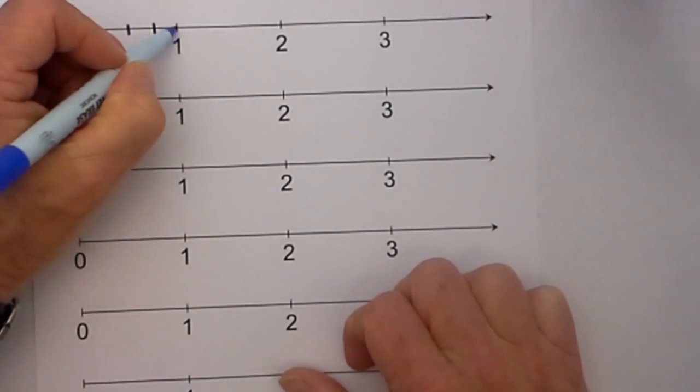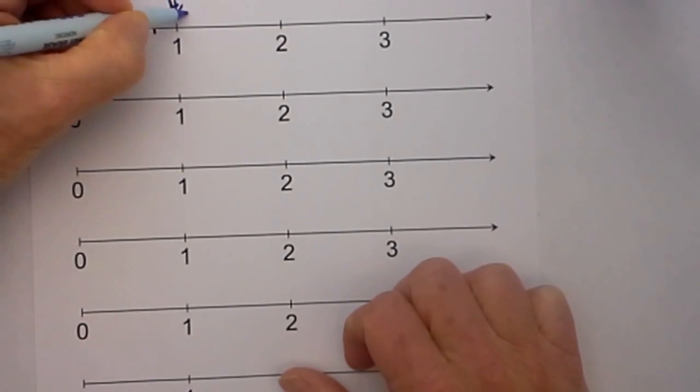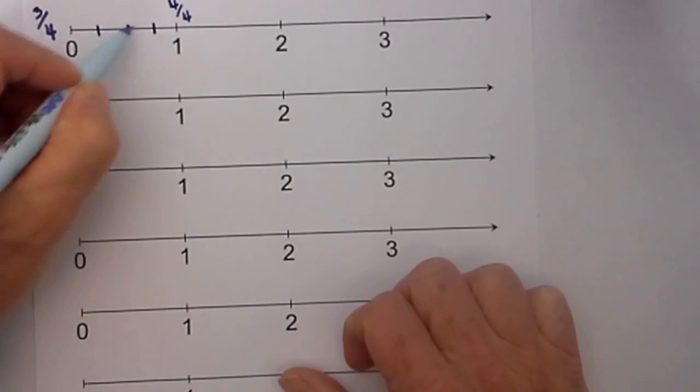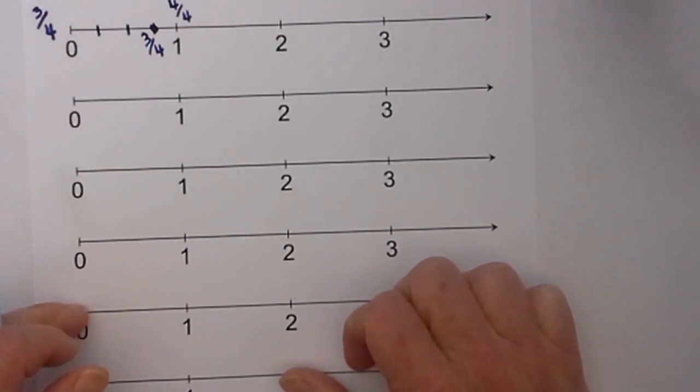So this 1 over 1 will be the same as 4 over 4. Then the numerator tells you how many spaces to move over between the whole numbers. So it will be 1, 2, 3. So 3 fourths will be right there.